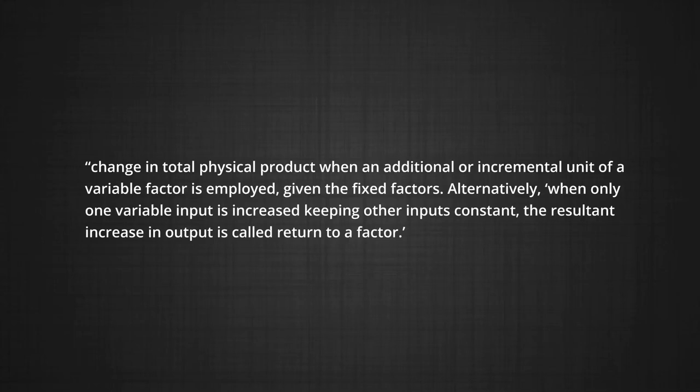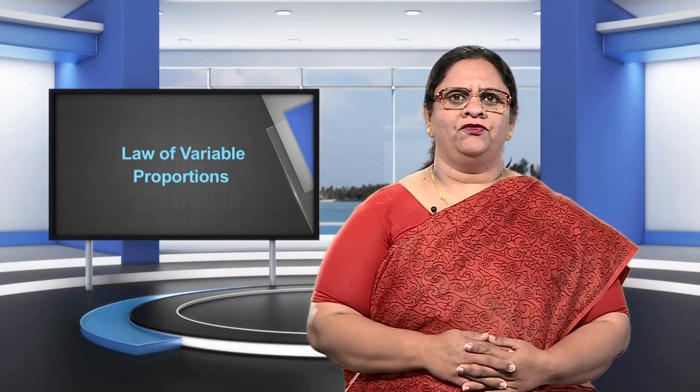Let us start with returns to factor. This means change in total physical product when an incremental unit of a variable factor is employed, given all the fixed factors. Alternatively, when only one variable input is increased, keeping other inputs constant, the resultant increase in output is called a return to a factor. As the amount of the variable factor is increased, returns to factor change according to the law of variable returns to factor, which is also called the law of variable proportions.